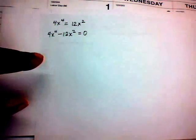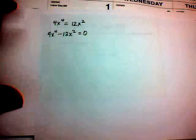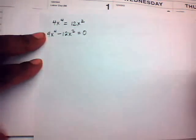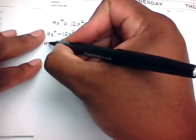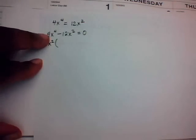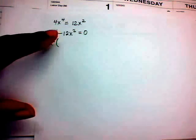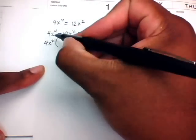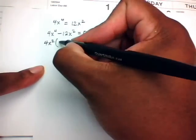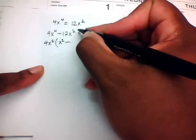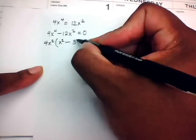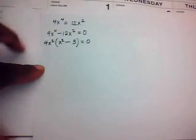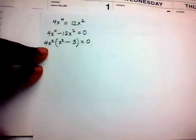We have two terms, so we pull out a common factor from 4x⁴ and 12x². The common numerical factor is 4, and the common variable factor is x² (the smallest exponent). So we factor out 4x². Dividing: 4x⁴ ÷ 4x² = x², and −12x² ÷ 4x² = −3. This gives us 4x²(x² − 3) = 0.